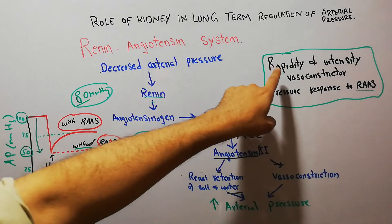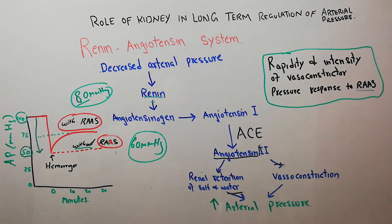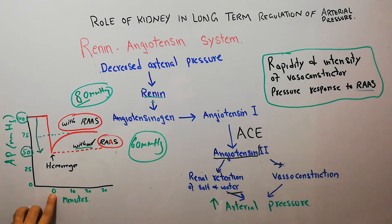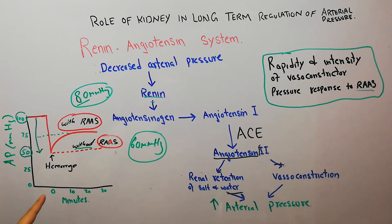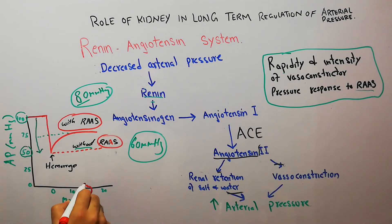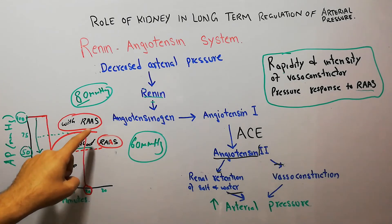Now, how rapidly does the arterial pressure rise back to its original value with the help of RAS? The point at which hemorrhage occurred is labeled as 0 minutes. Time is plotted on the x-axis and arterial pressure on the y-axis. Around 20 minutes after hemorrhage, the arterial pressure has risen back to its elevated value — so it takes around 20 minutes for the renin-angiotensin system to elevate the arterial pressure.